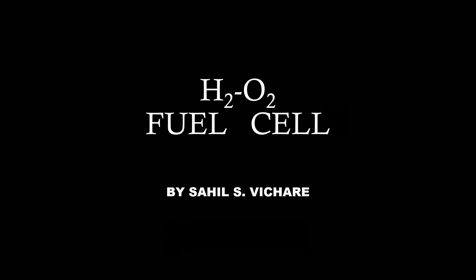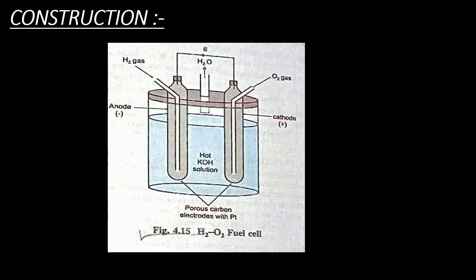Let's understand its construction first. We take a vessel and in that vessel we take a hot KOH solution. In this hot KOH solution we insert two electrodes — one is our anode and the second one is our cathode. These anode and cathode electrodes are made up of porous carbon with platinum. Platinum acts as a catalyst, which fastens the reaction.